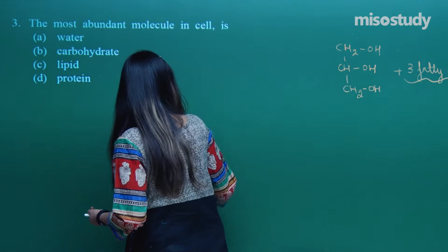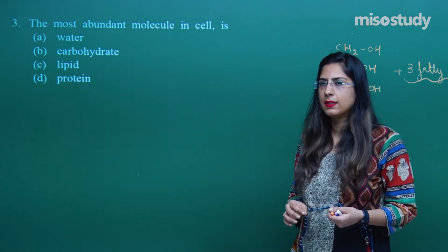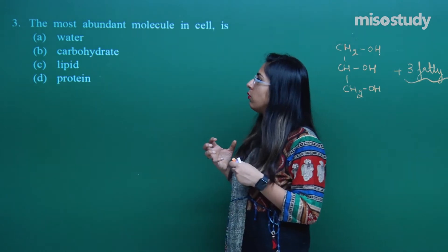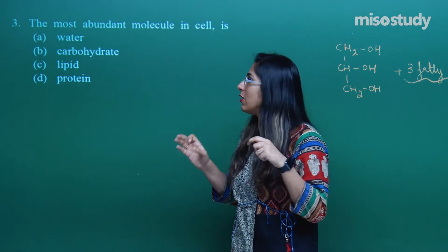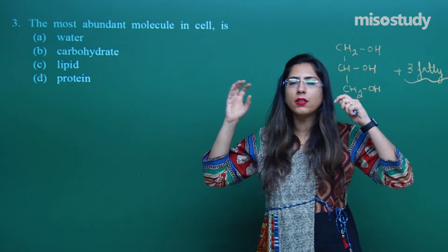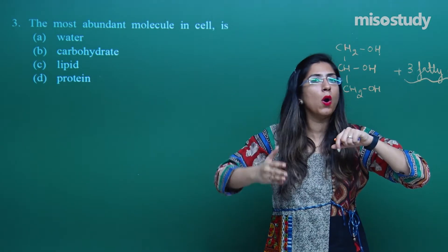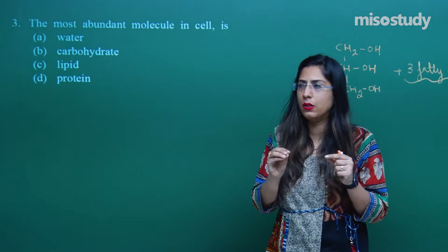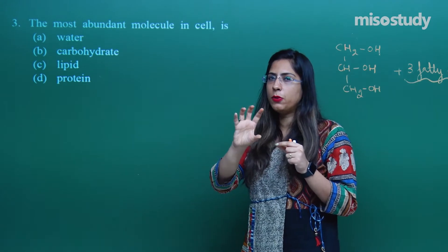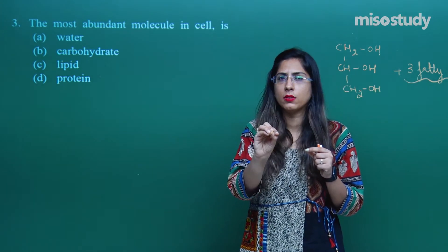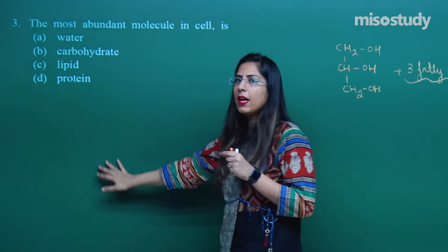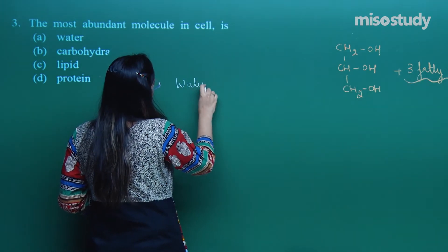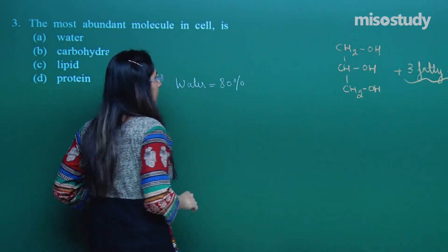Now, a very easy question: the most abundant molecule in a cell. Students might feel they are asking for some complex molecule like carbohydrate, lipid, or protein, and may not think about water. But water is also a molecule, and we know that in the cell 80% of molecules are water. Rest 20% are carbohydrates, lipids, proteins, nucleic acids, and inorganic salts.